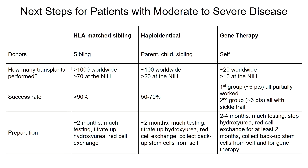For patients with moderate to severe disease considering HLA-matched sibling transplant, the donor is their sibling. About 1,000 patients have been transplanted worldwide with about 70 at the NIH, and the success rate is greater than 90%. Patients need to be around the NIH for about two months for pre-transplant testing, hydroxyurea titration, and red cell exchange transfusions. For haploidentical transplant, the donor can be a parent, child, or sibling. About 100 transplants have been performed worldwide with more than 20 at the NIH, and the success rate was previously 50–70% but is much better now. Patients also need about two months for testing, hydroxyurea titration, red cell exchange, and backup stem cell collection.